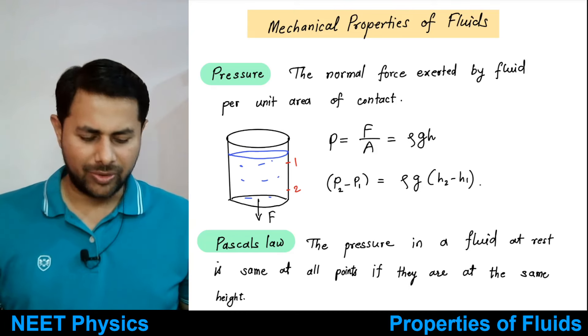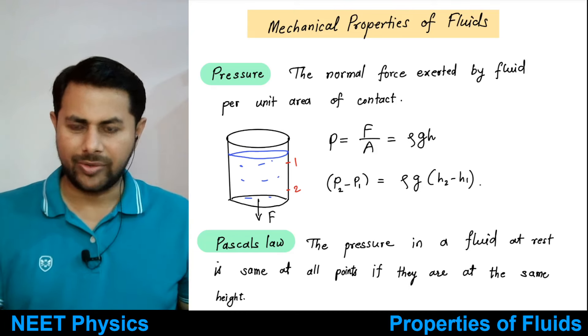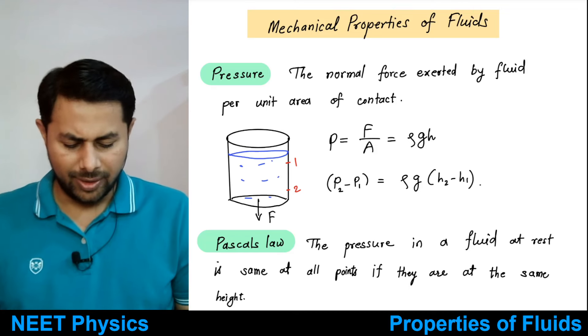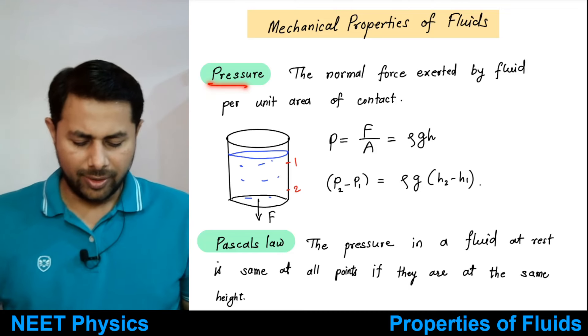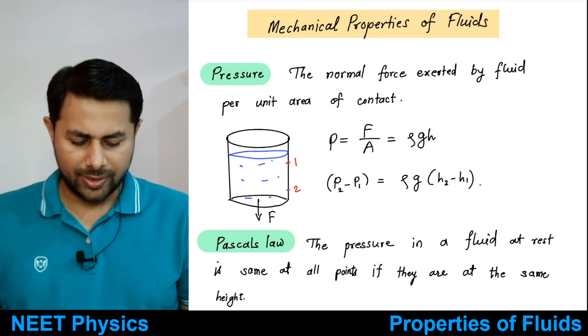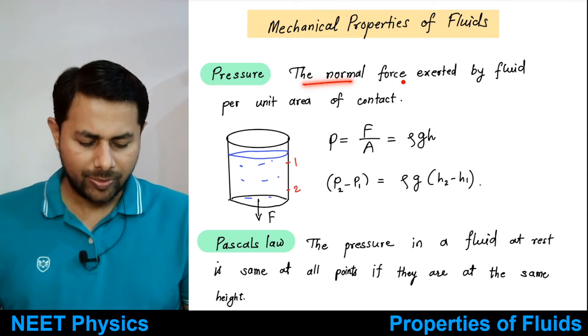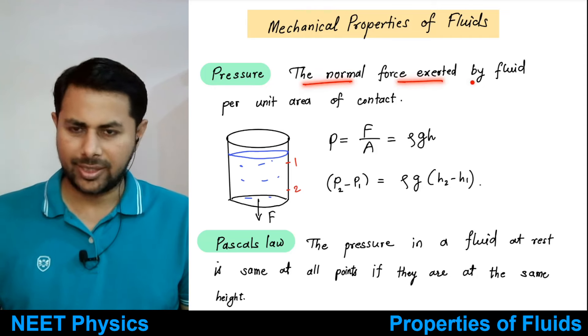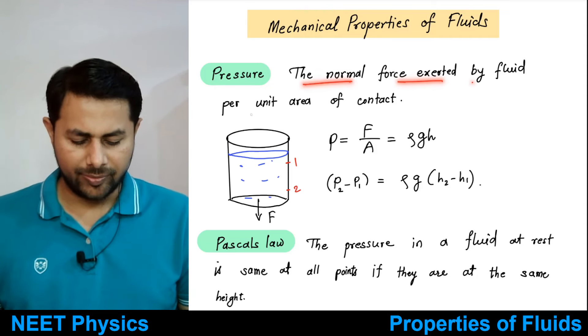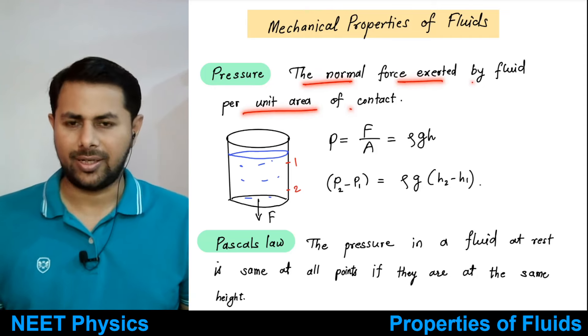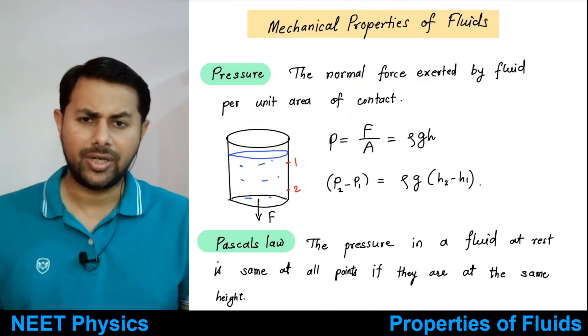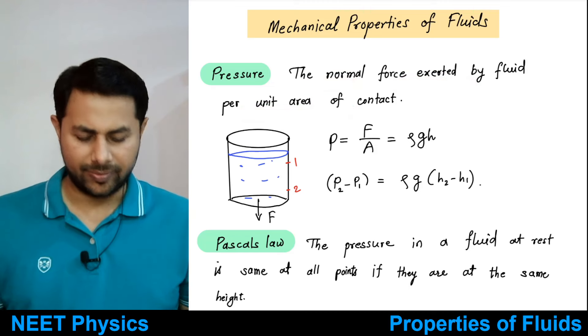Mostly we are going to talk about liquids in this chapter. Now, what is pressure? It is the normal force exerted by a fluid per unit area, per unit area of contact.